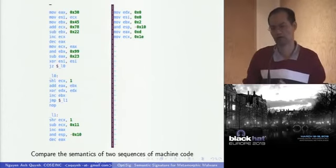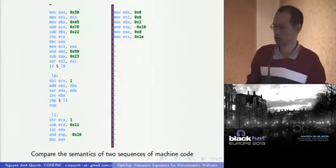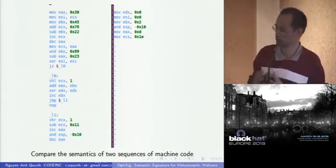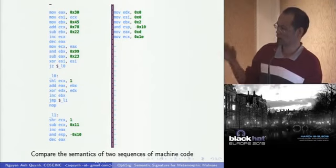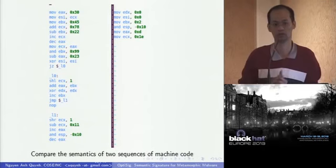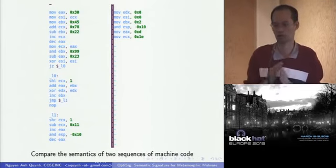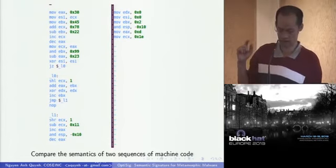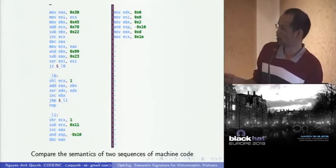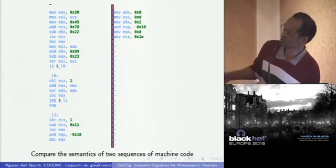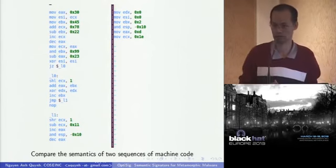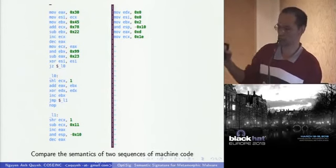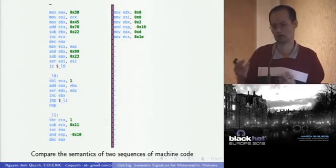Detecting metamorphic malware is a very hard problem. In this research, we try to solve the core problem: given two different code sequences in assembly form, can we answer whether the left code and the right code do the same thing or not? We want a yes or no answer. If the two codes are equivalent, we can consider one the signature. All codes transformed from it that match can be considered from the same metamorphic malware. So our problem is comparing two sequences of machine code and determining if they are equivalent.